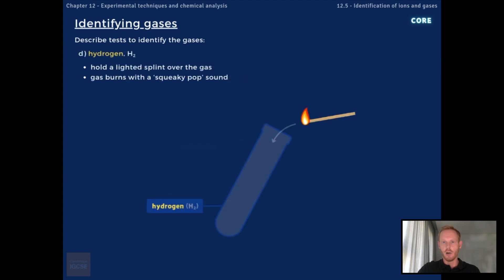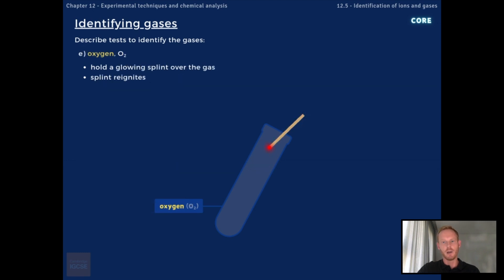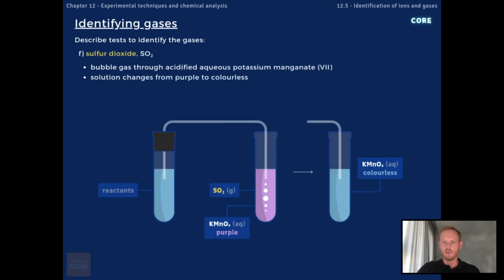To test for hydrogen, lower a lighted splint into the test tube containing the gas. If the gas is hydrogen, the splint will ignite, making a distinct popping sound. To test for oxygen, lower a glowing splint into the test tube containing the gas; if the gas is oxygen, the splint will reignite. To test for the presence of sulfur dioxide, bubble the gas produced through acidified aqueous potassium manganate 7. If the gas is sulfur dioxide, the colour of the solution changes from purple to colourless.